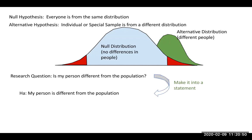If you take the question 'is my person different from the population?' and make it into a statement, you get: 'my person is different from the population.' This is the alternative hypothesis — my person is from the green distribution. So if I take my research question and make it into a statement, it would be: my person is different from the population.